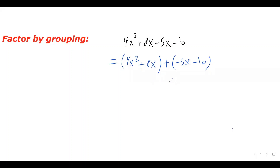Now we focus on one group at a time. Focus on the first group — I want to factor out the greatest common factor between these two terms. The greatest common factor here is 4x, so I factor that out. 4x squared over 4x leaves x, and 8x over 4x leaves 2.